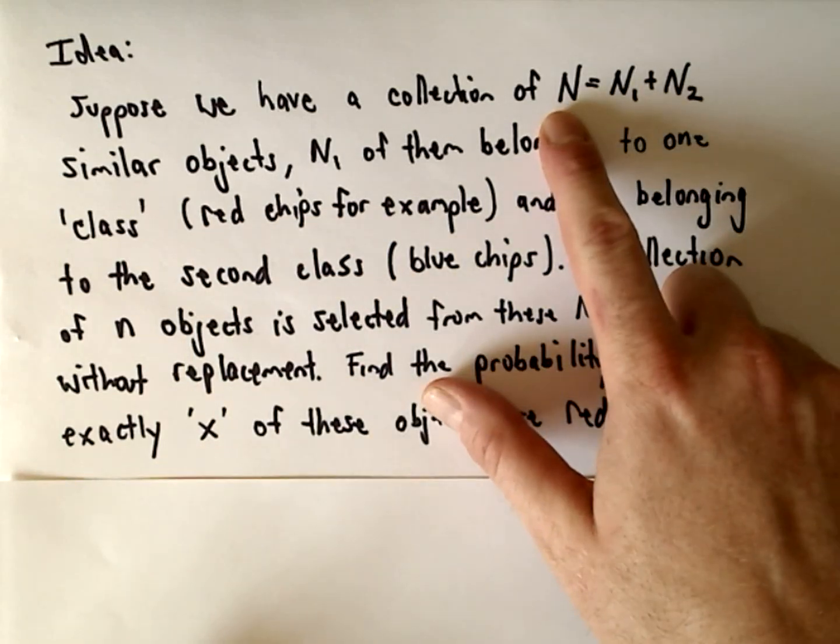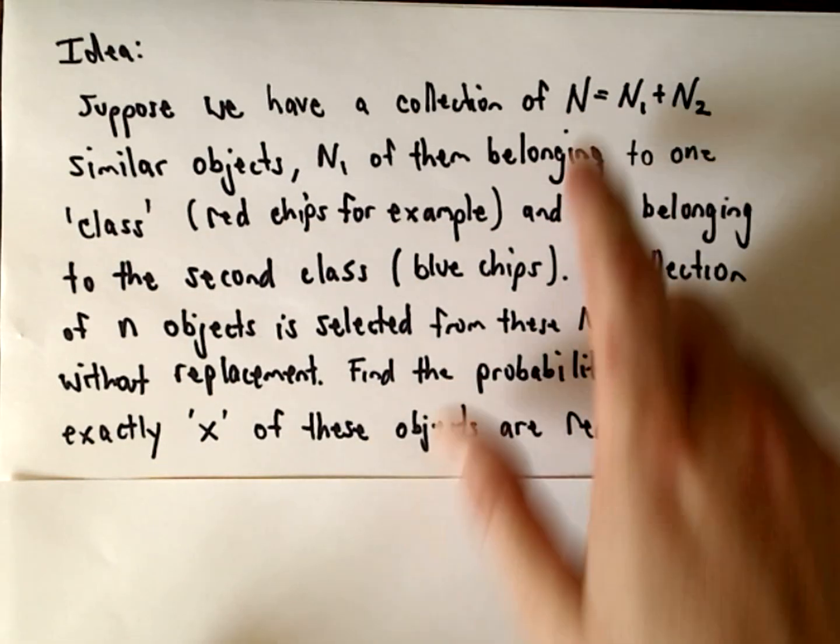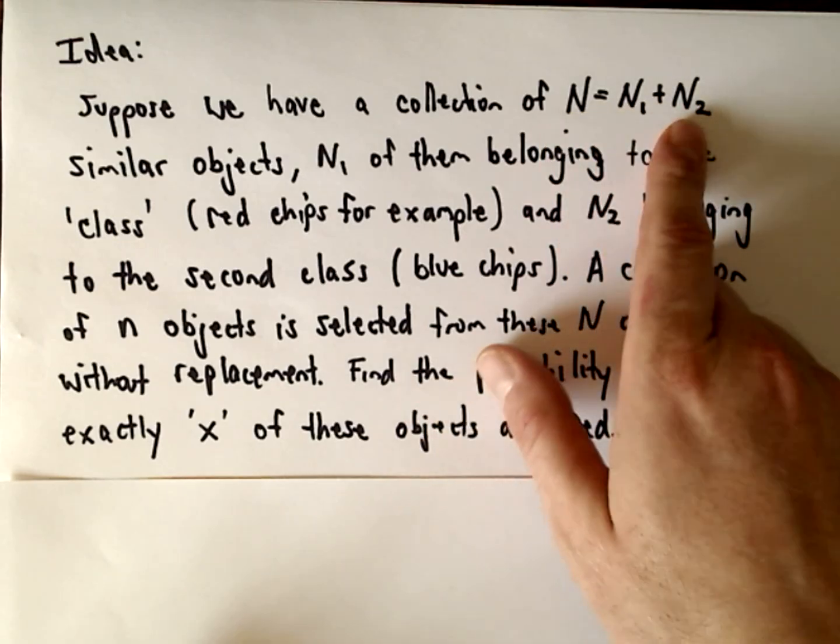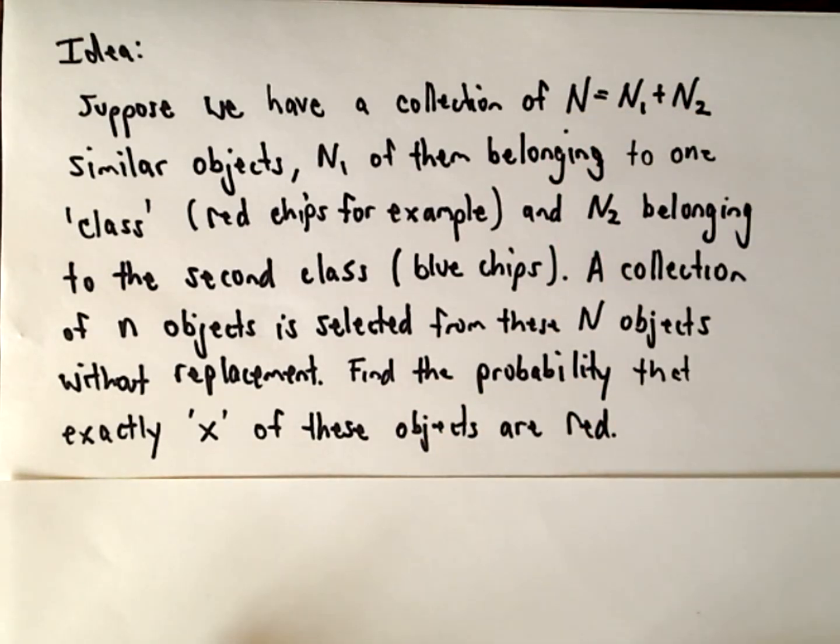Maybe you have people, some number of boys and girls. Maybe you have some number of objects - some of them work, some of them are broken. So you've got this class of objects that are similar, but there's something that distinguishes them.